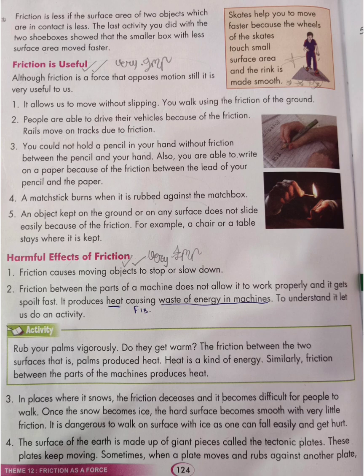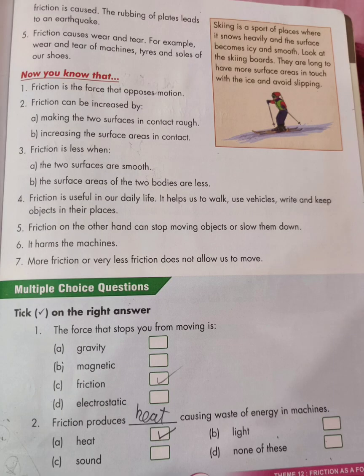Number 4: The surface of the earth is made up of giant pieces called tectonic plates. These plates keep moving. Sometimes when a plate moves and rubs against another plate, friction is caused. The rubbing of plates leads to an earthquake. So now you know how earthquakes occur — when the tectonic plates rub one another, friction is caused, and because of this, earthquakes occur.